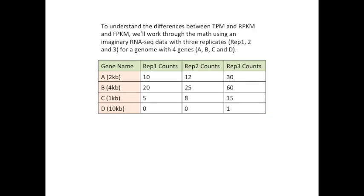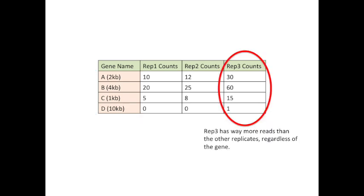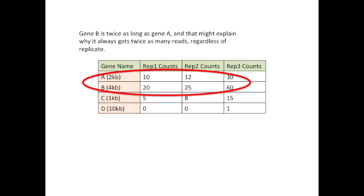Let's start with an example. To understand the differences between TPM and RPKM and FPKM, we'll work through the math using an imaginary RNA-seq data set with three replicates — rep 1, 2, and 3 — for a genome with only four genes: A, B, C, and D. On the left, we see the names of our genes and the lengths of each gene. To the right, we see the read counts for each replicate. We see that replicate 3 has way more reads than the other replicates regardless of the gene, meaning it had higher sequencing depth. We're going to normalize for that. We also see that gene B is twice as long as gene A, which might explain why it always gets twice as many reads regardless of the replicate. We're going to normalize for this too.